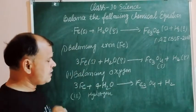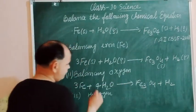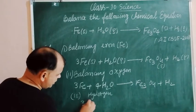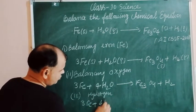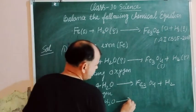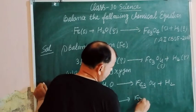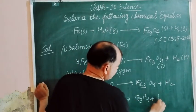So we multiply right side hydrogen by 4. So 3Fe plus 4H2O gives Fe3O4 plus 4H2.